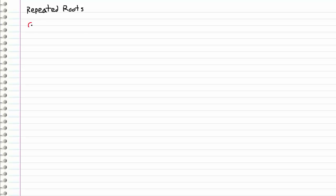Let's go back to the constant coefficient case where we have a differential equation of the form ay double prime plus by prime plus cy equals zero — a constant coefficient, linear second order differential equation. The case we're going to look at today is the repeated roots case. We already looked at real roots, then imaginary roots, then complex roots, and now repeated roots.